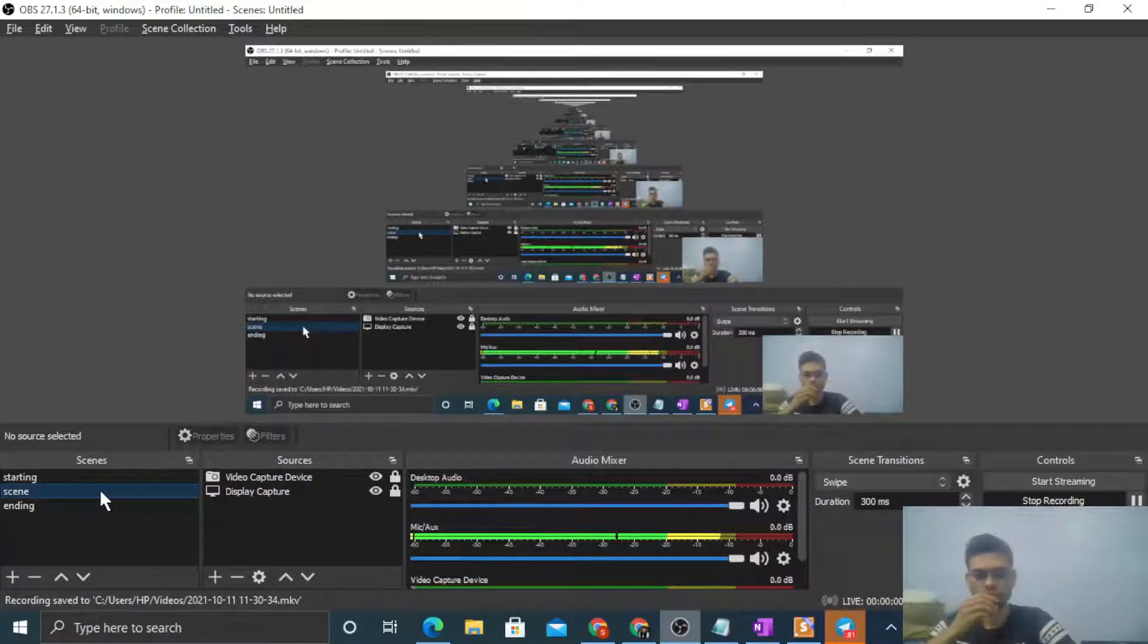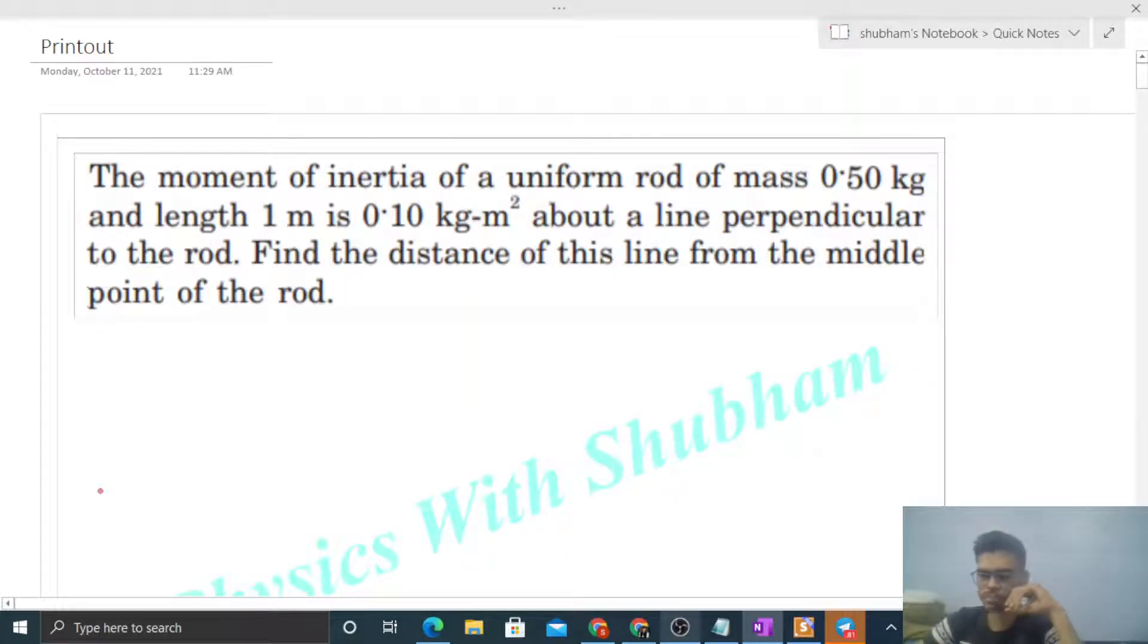Okay, hi everyone. So today let's discuss this interesting problem. It says the moment of inertia of a uniform rod of mass 0.5 kilogram and length 1 meter is 0.1 kilogram meter square about a line perpendicular to the rod. Find the distance of this line from the middle point of the rod.